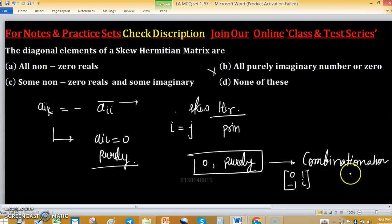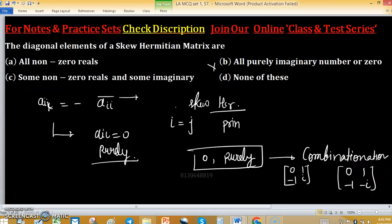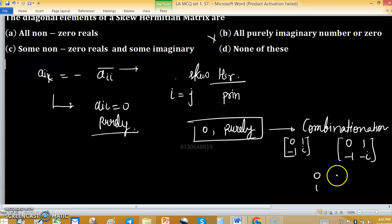If I take transpose, the transpose of this matrix will be 0, minus 1, minus iota. And taking conjugate, and if I take transpose of it: 0, 1, minus 1, minus iota.